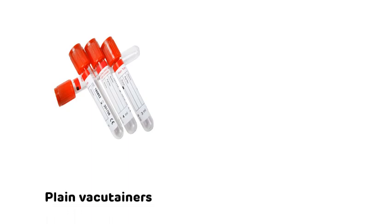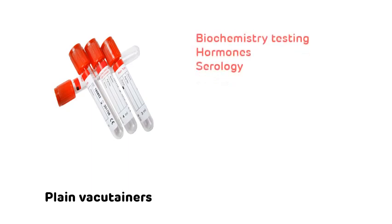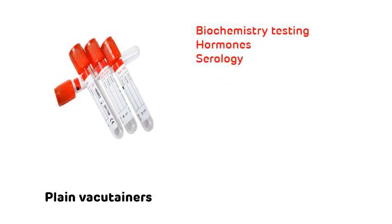The second vacutainer is red in color — that is the plain vacutainer. The plain vacutainer does not contain any type of additives, but it can contain a clot activator. The uses of plain vacutainers include almost all biochemistry tests like RFT, LFT, uric acid, various enzymatic tests, hormones tests, and serologic tests like HIV, HBsAg, malaria card, and dengue card.